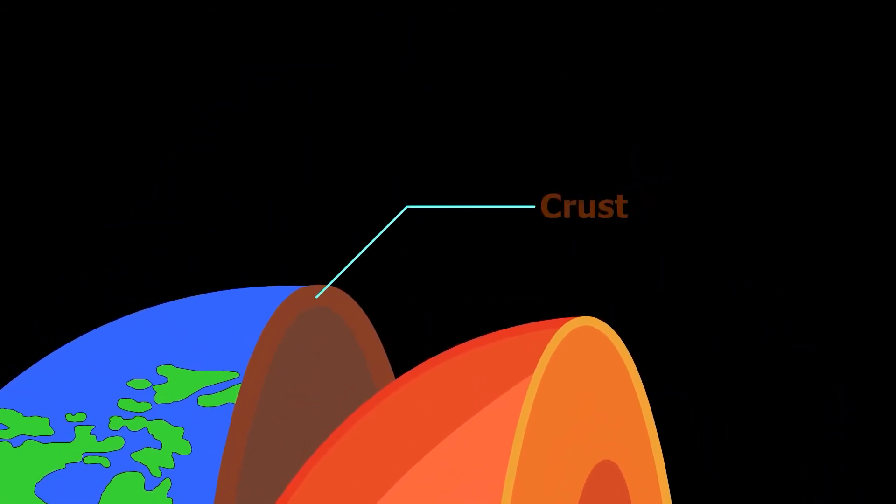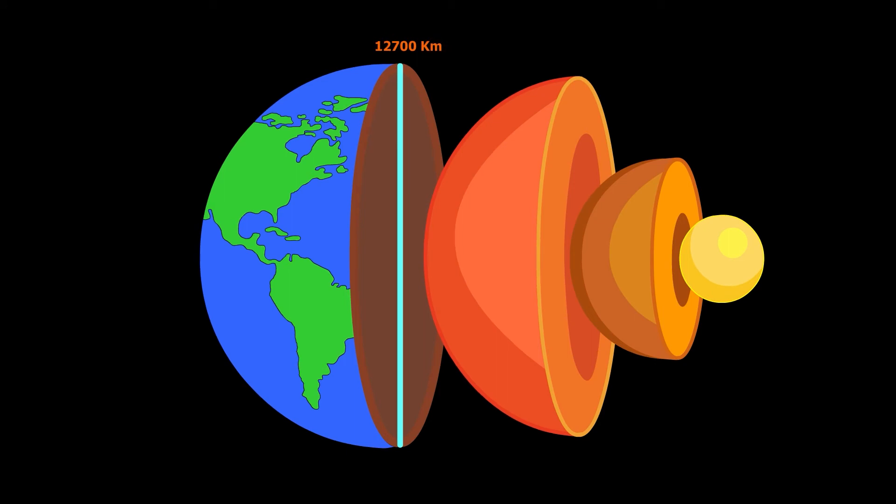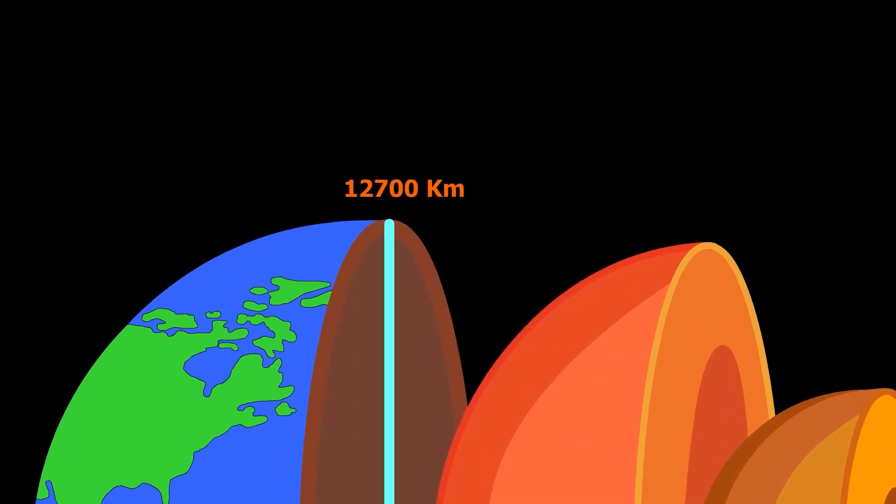The outermost layer, the Earth's crust, has an average depth of about 40 kilometers, as compared with the diameter of the Earth, which is around 12,700 kilometers. The Earth's crust is very small.